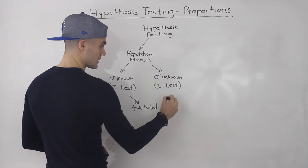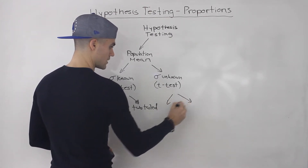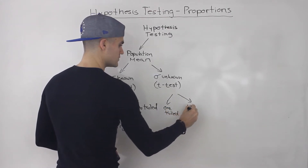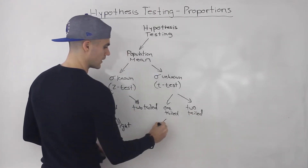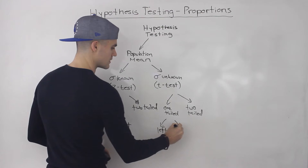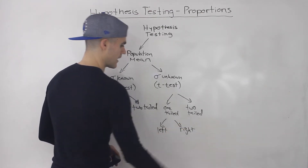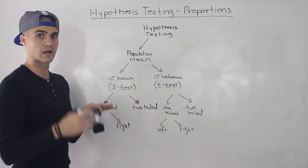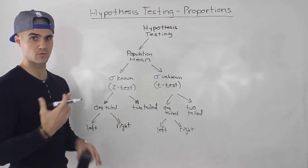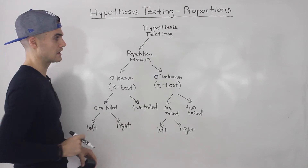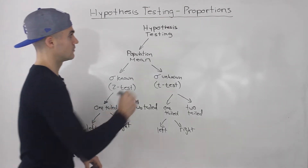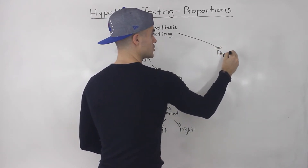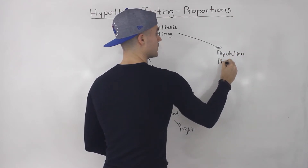Same thing when the population standard deviation is unknown — either we got a one-tailed or a two-tailed, and then the one-tailed is split up into a left-tailed test and a right-tailed test. And then within that you can also have a list versus the parameters being given of the sample, so we've dealt with that too. But it all sort of fits within this diagram here. Now we can also do hypothesis testing on the population proportion, which is what we're going to be doing in this video.